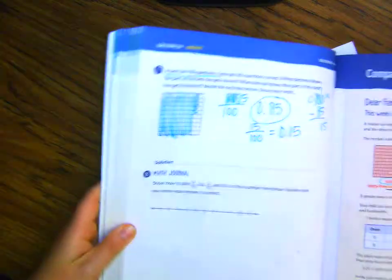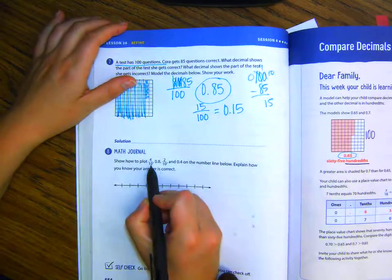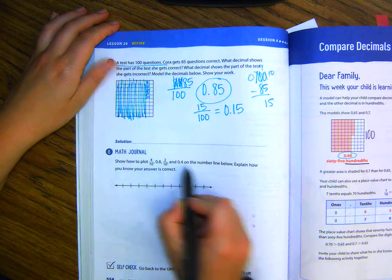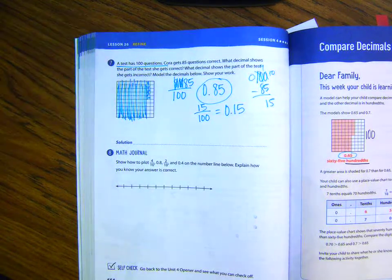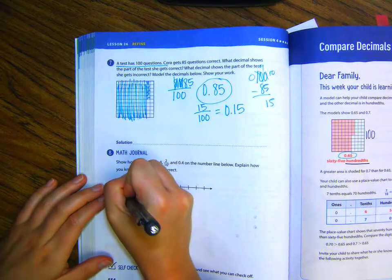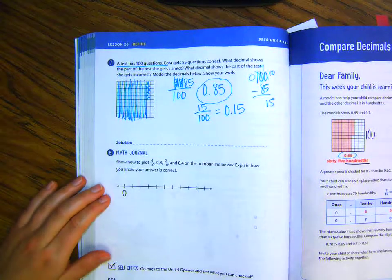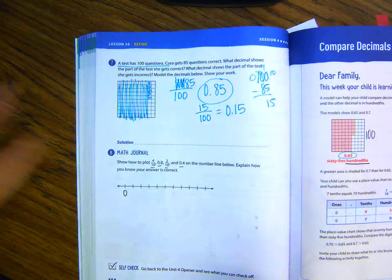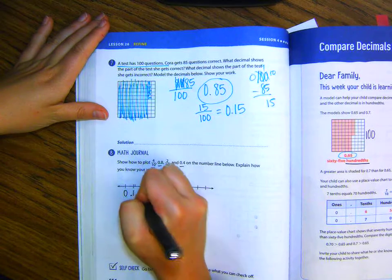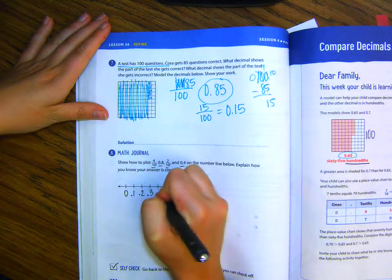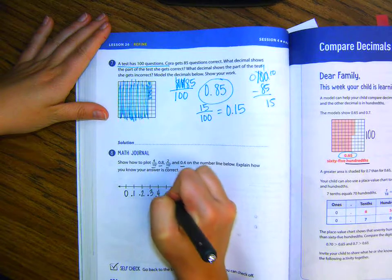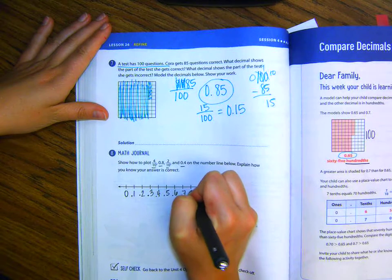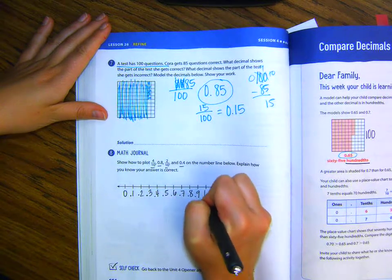Let's do number eight on page 554 to finish up. Show how to plot four-tenths, eight-tenths, two-tenths, and four-tenths on a number line below. Explain how you know your answer is correct. So, we're always going to have to start with zero. And then, I'm just going to start, since all of mine are in tenths, I'm just going to start with one-tenth, two-tenths, three-tenths, four-tenths, five-tenths, six-tenths, seven-tenths, eight-tenths, nine-tenths, and then this would be one whole.